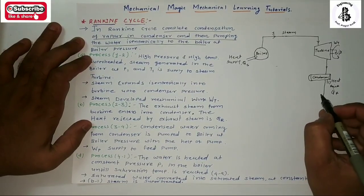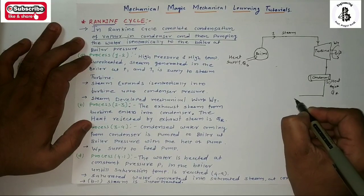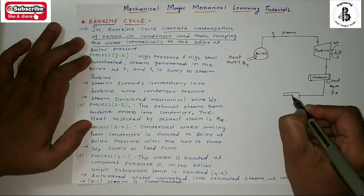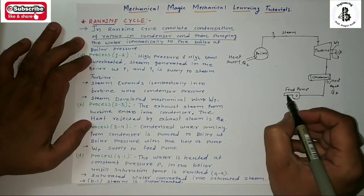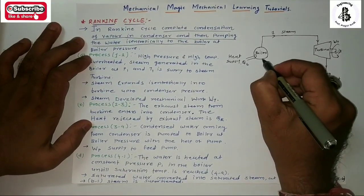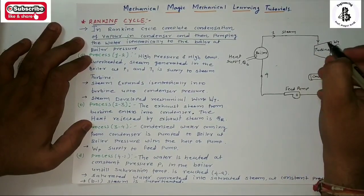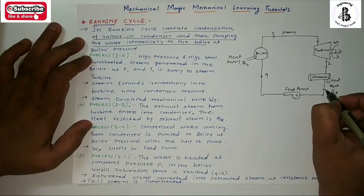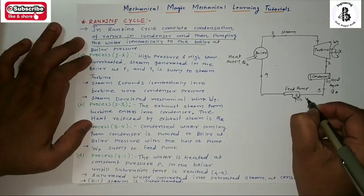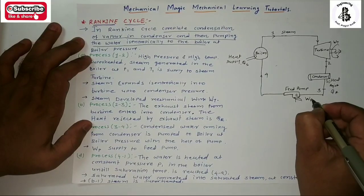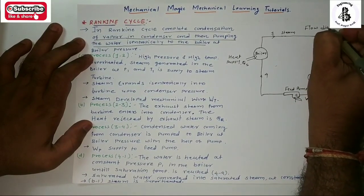After work is done by the turbine, the rest of the heat is rejected to the condenser, represented as QR. The steam is converted back into water, and that water is raised to boiler pressure by the feed pump. The cycle points are labeled 1, 2, 3, and 4. Some work is required by the pump, called pump work.